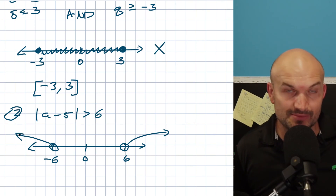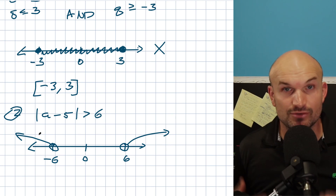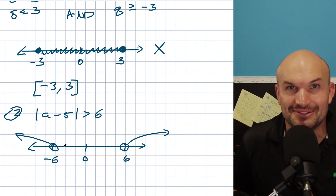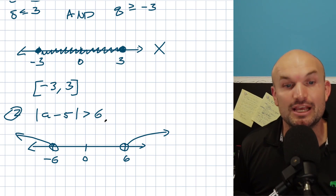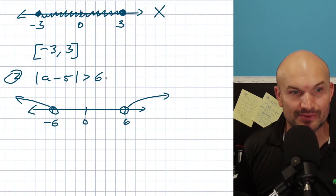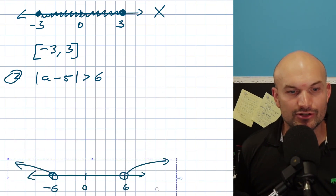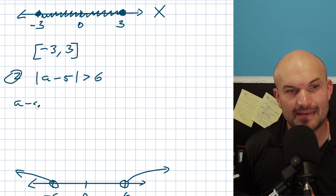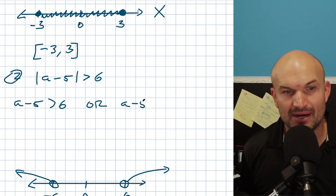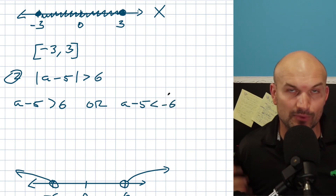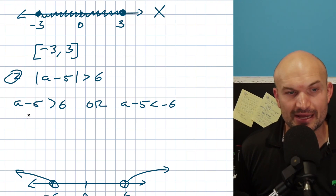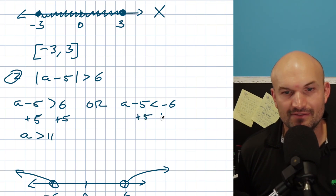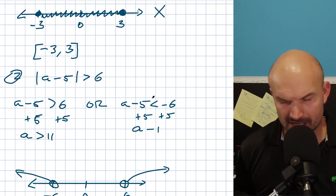Any value going in the negative direction is also 6 away. We don't worry about positive or negative direction — just the distance. Hopefully you understand that these two sections do not intersect, so having an and inequality would yield no solution. This is going to be the or case. So we create the positive and negative cases: a minus 5 is greater than 6, OR a minus 5 is less than negative 6. When you negate, remember to flip the sign. Adding 5 to both sides: a is greater than 11, and a is less than negative 1.